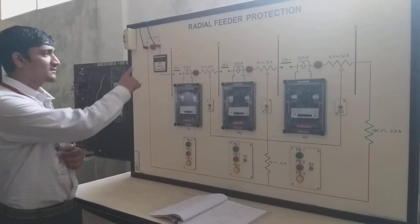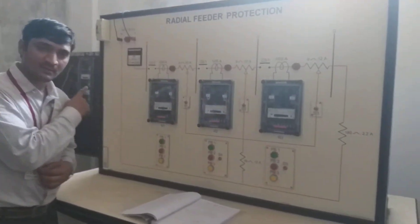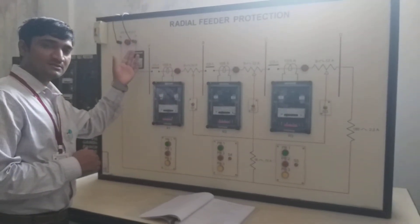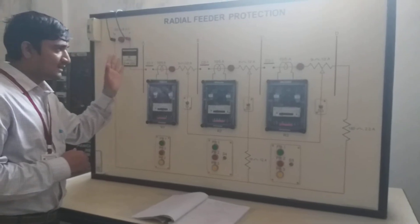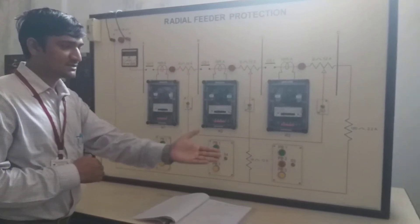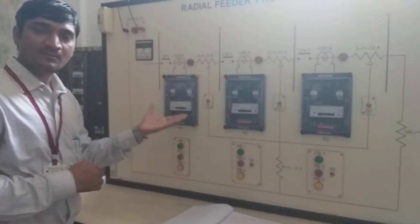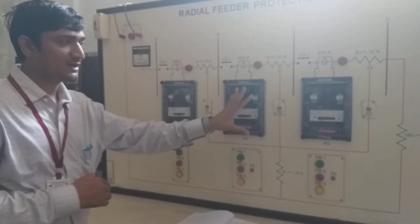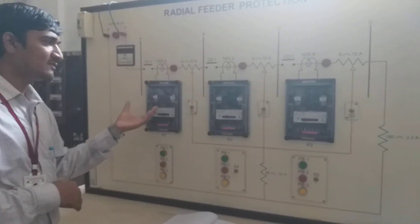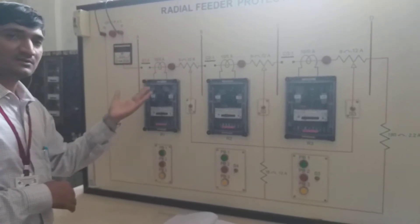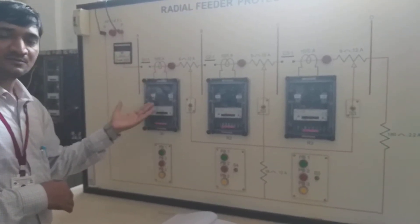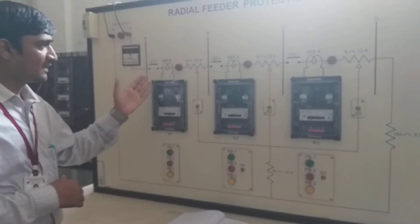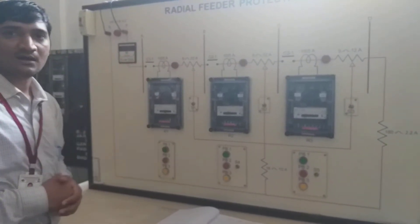In radial feeder protection, only one feeder is available from the generator to the load. Here in radial feeder protection we protect the feeder using protective devices. The protective devices include CTs, relays, and circuit breakers, which operate when a fault occurs.